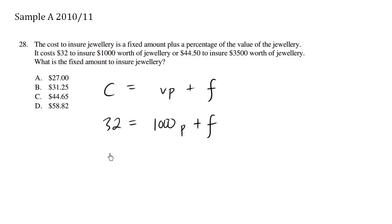It also costs $44.50. So the cost is $44.50 equals, to insure $3,500 worth of jewelry, the value here is $3,500 times a certain percentage plus F. So can we solve for F, the fixed amount given these two equations, equation one and equation two?